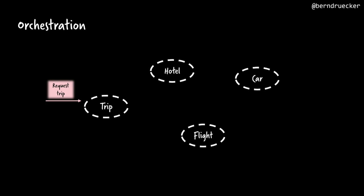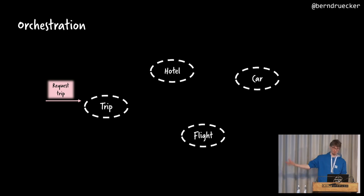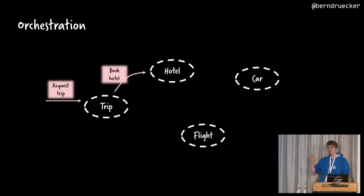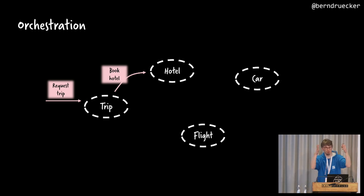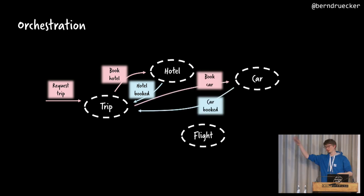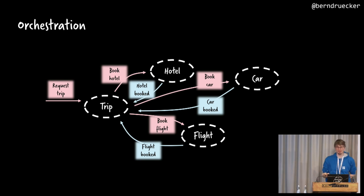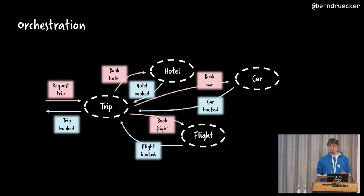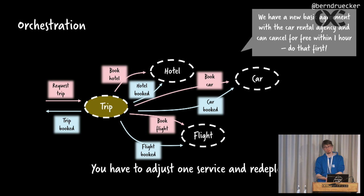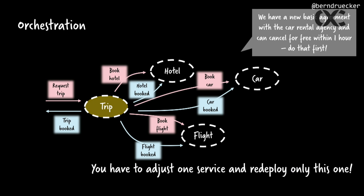The alternative is orchestration. The trip service gets a request, and instead of an event chain, the trip service says directly: 'hotel service, please book a hotel for me' — that's a command — waits until done, then 'car rental, please book a car for me,' then the flight. We have that one point where we control the sequence. If you want to change something, you have exactly one point where you can change things — that's one of the big advantages here.